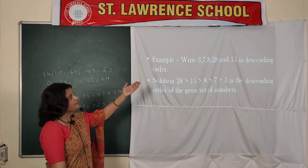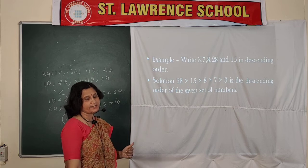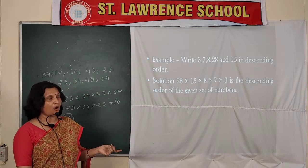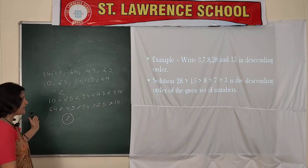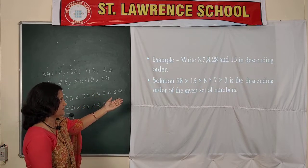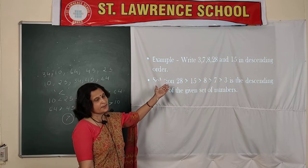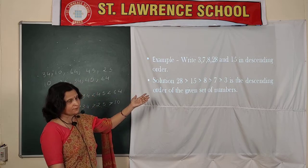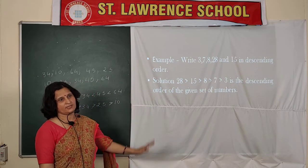Now an example: the numbers given are 3, 7, 8, 28, and 15. You have to arrange these in descending order, similar to the first example. First write the largest number, which is 28, then 15, then 8, then 7, and then 3.